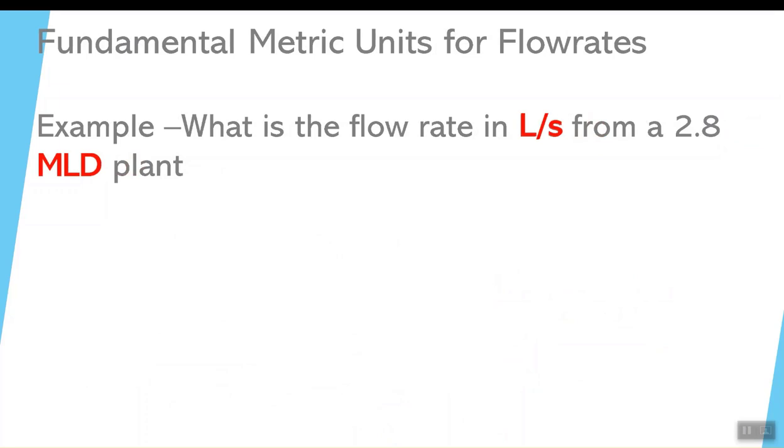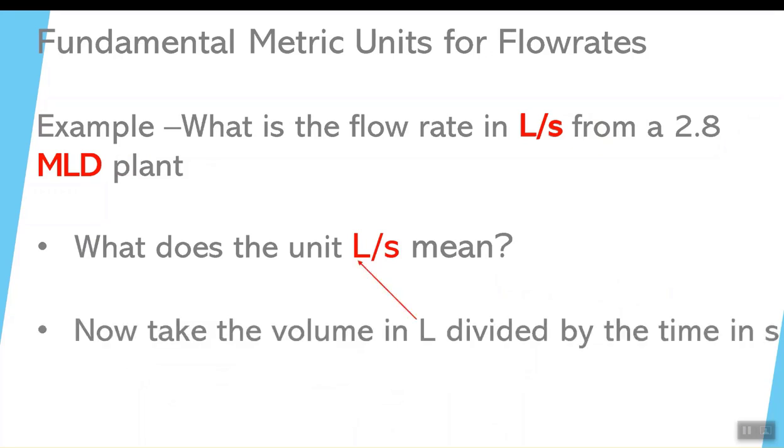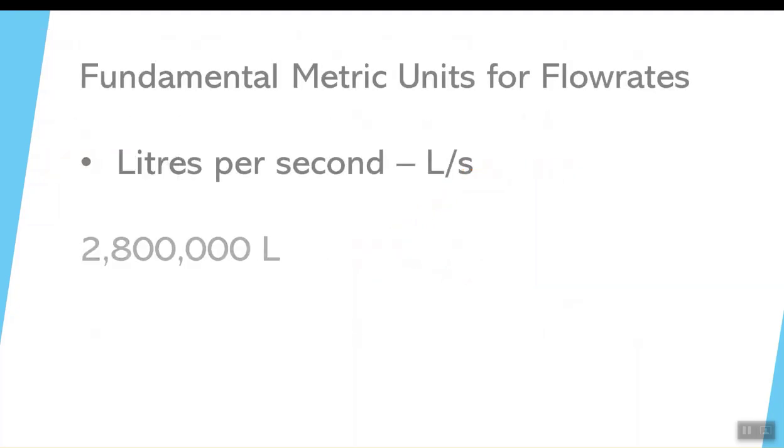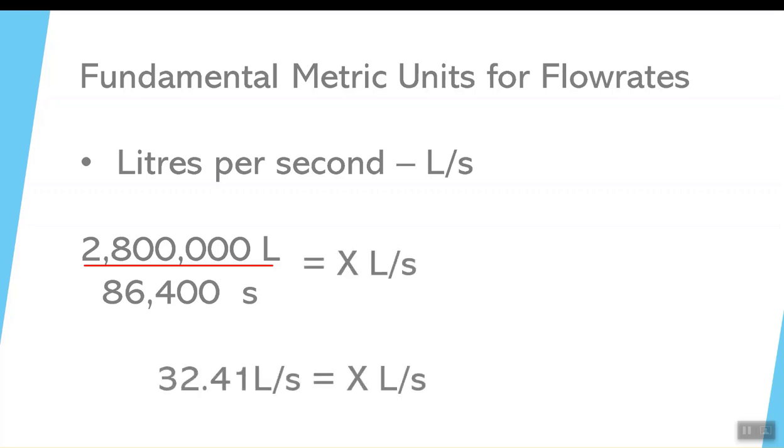When we go to the next step, we have to figure out what does L/s mean? L is a volume, and slash means divided by—that's what that symbol means. S means divided by a time. Do we have the liters? Yes, 2,800,000 liters. Do we have a time? Yeah, we have 86,400 seconds. Because we have those values, now we can do a very simple division: 2,800,000 liters divided by 86,400 seconds. You end up with an answer which is approximately 32.41 liters per second.